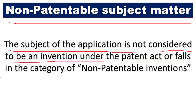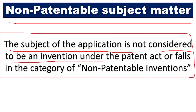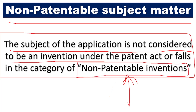The next ground is non-patentable subject matter — the subject of the application is not considered to be an invention under the Patent Act, or falls in the category of non-patentable inventions. In our previous video, we have seen about non-patentable inventions where some discoveries or inventions are mentioned which are not considered for patent. If your invention involves such non-patentable inventions, then the public can put for pre-grant opposition.